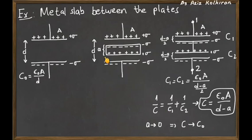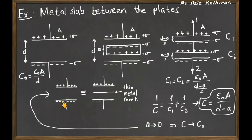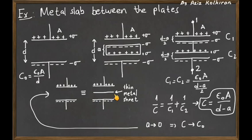If we decrease the thickness of this metal slab so that it becomes a very thin metal sheet, we recover the same capacitance. This means that when you insert a very thin metal sheet between the plates, there is no difference in capacitance between the two configurations, as long as you keep the distance between the original plates the same and the metal sheet is parallel to the capacitor plates.